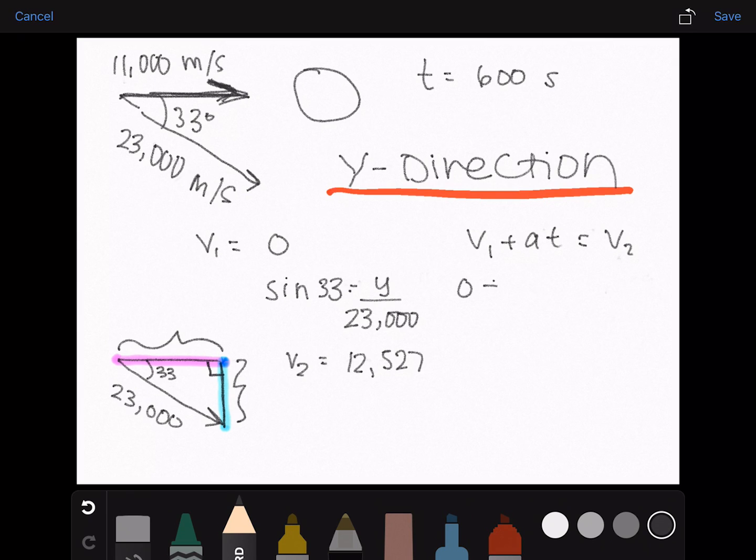V1 is 0, plus a times 600 equals 12,527. Solve for a in the y direction, and rounding it to two sig figs equals 21 meters per second squared. So our final answer, ax, ay, will equal 14, 21 meters per second squared.